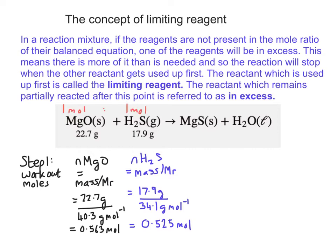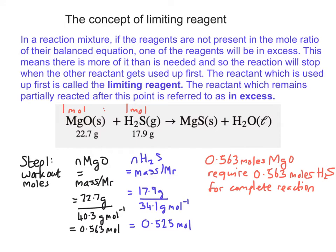Now bearing in mind the mole ratio of magnesium oxide to hydrogen sulfide in this reaction is 1 to 1, it's reasonable to assume that 0.563 moles of magnesium oxide would also require 0.563 moles of hydrogen sulfide for a complete reaction. So the amount of H2S present, which is 0.525 moles, is less than the amount of H2S needed, which is 0.563 moles.